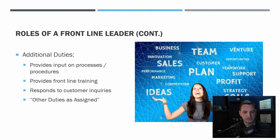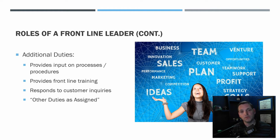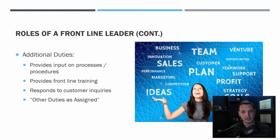There are always additional duties. You can provide input on processes or procedures — if something isn't working quite as well as expected, you can put in some input and bump it up the chain to improve the process. You also provide frontline training. Once you've moved up to the next level, you're usually providing training to the people below you — the job you used to have or have been trained to teach. The way I'm training this class, I've been through dozens of different trainings and learned these skills from leading people and being in that position.